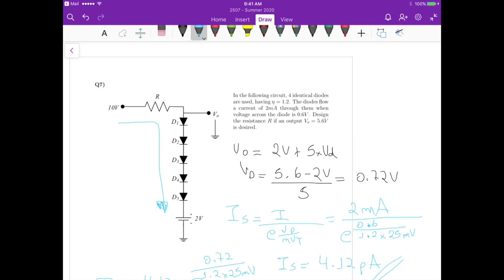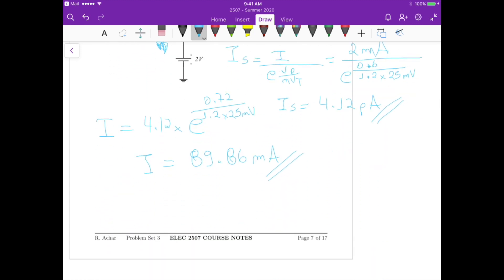For the case where we have that current flowing, the equation for this circuit would be minus 10 from the voltage source, plus the current ID times the resistance, plus 5 times the voltage across each diode, plus 2 volts equals 0. This gives us an equation for R that equals 10 minus 2 minus 5 times Vd divided by ID.